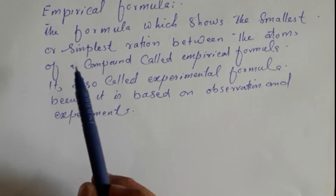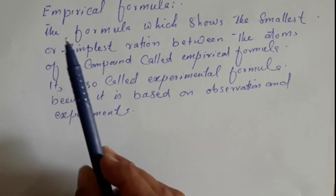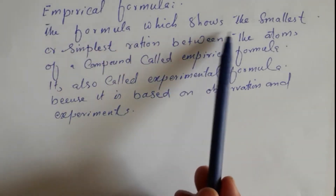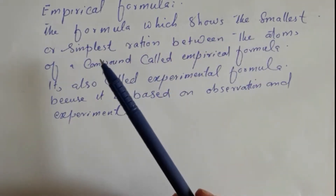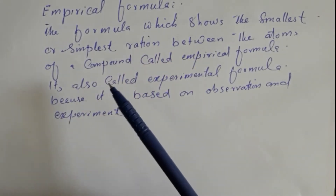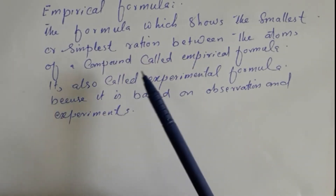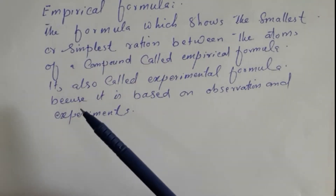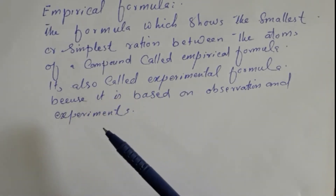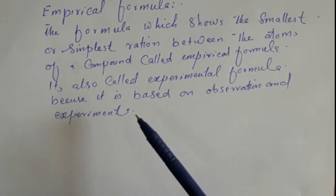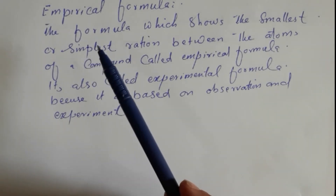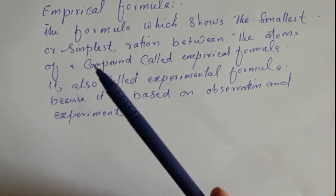Another type of chemical formula is the empirical formula. The empirical formula is the formula which shows the simplest or smallest whole number ratio between the atoms of a compound. It is also called the experimental formula because it is based on observation and experiment.